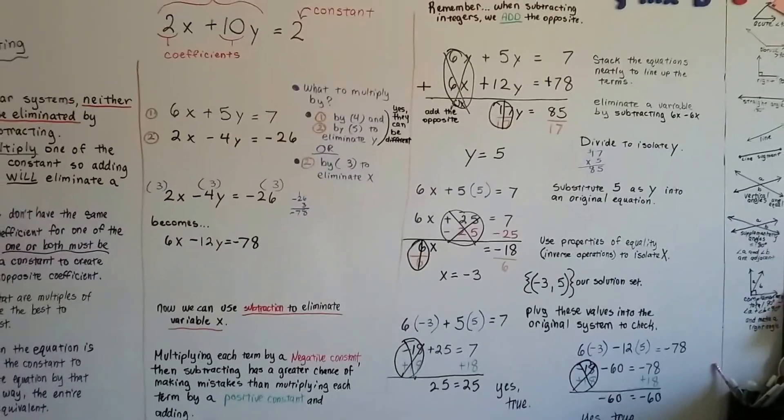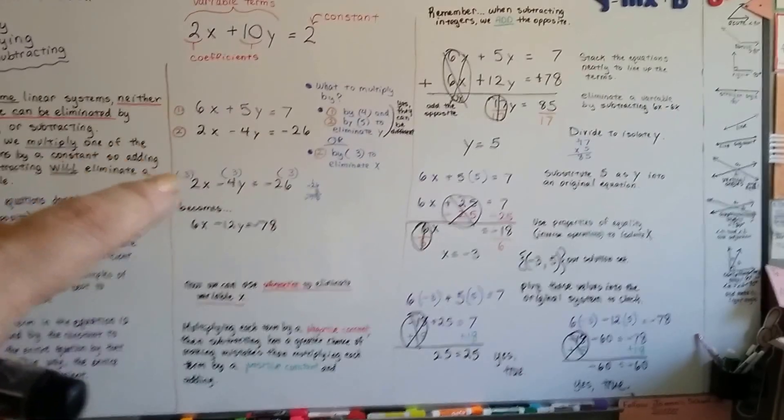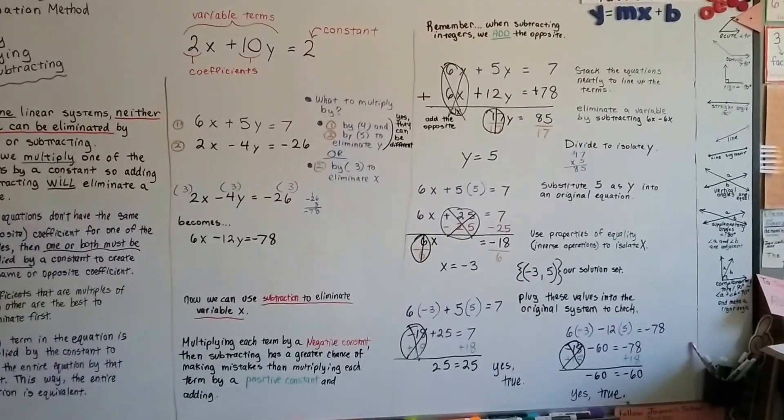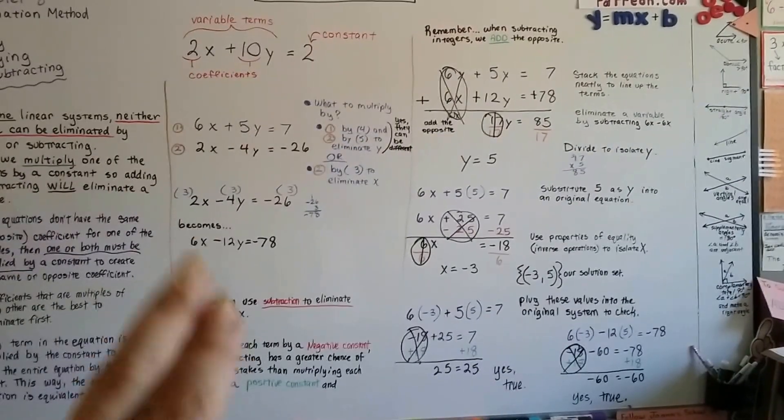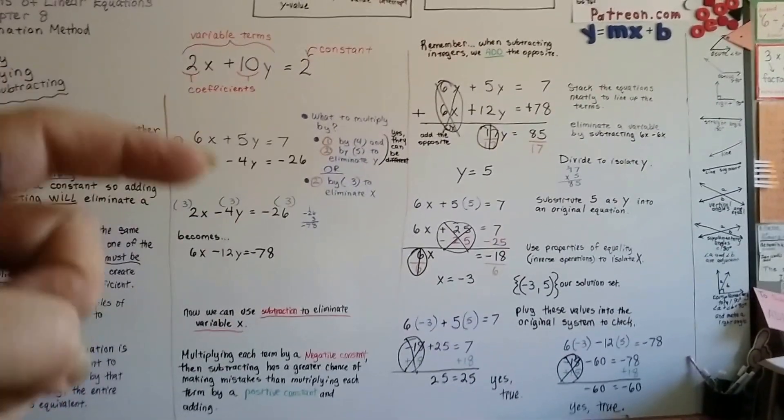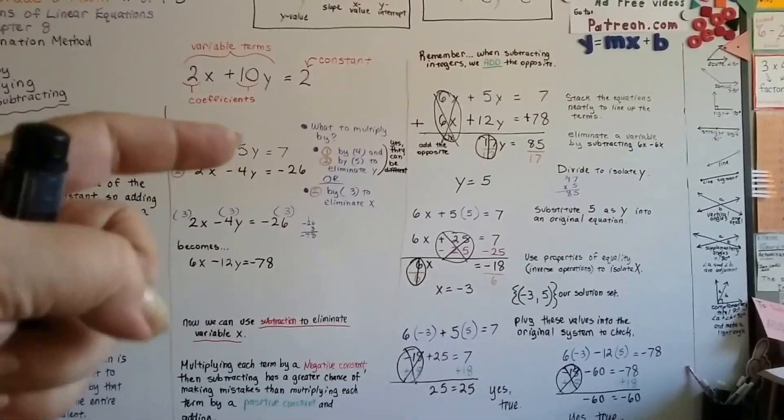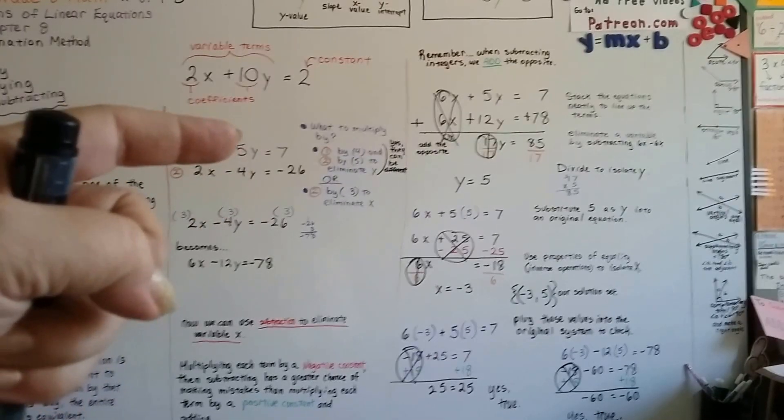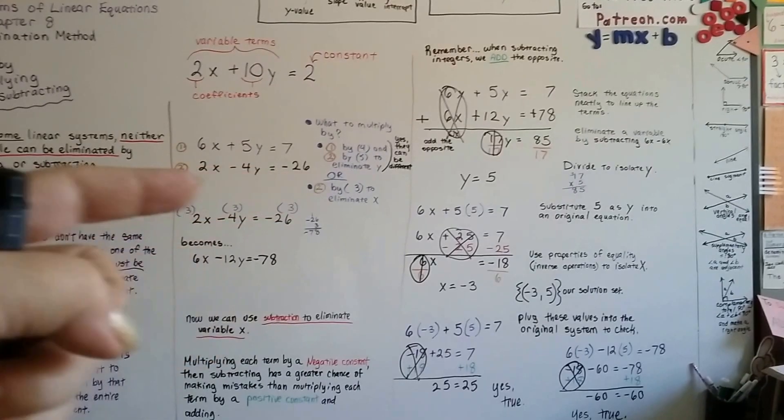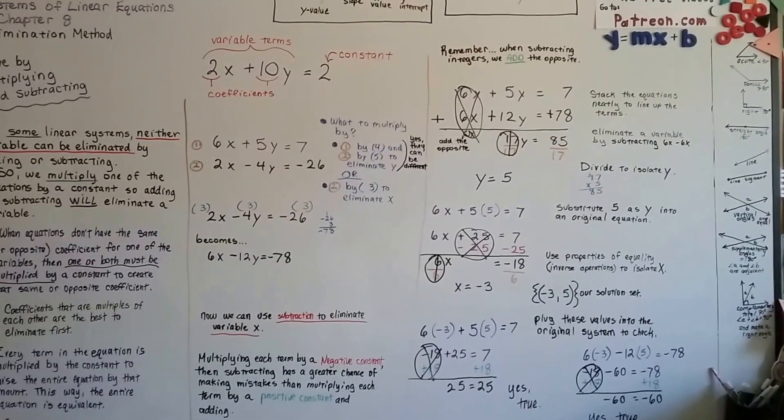See how we did that? So just remember, we could multiply it by a negative 3. There was no problem in doing that. It's just that you've got a greater chance of making a mistake doing it that way. So don't think you can't do that. And also remember that both equations can be multiplied by a constant and it doesn't have to be the same constant. We could have raised these to 20y by multiplying this equation by 4 every term and every term in this equation by 5. And we could have eliminated y first. No big deal.